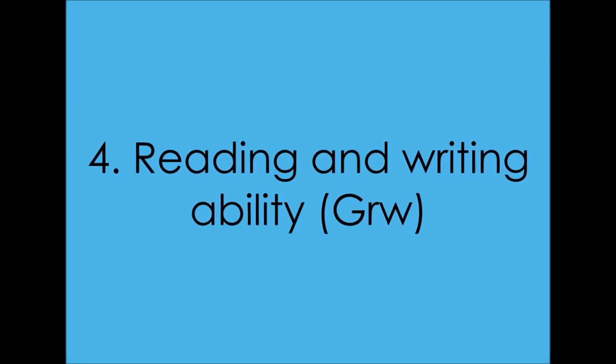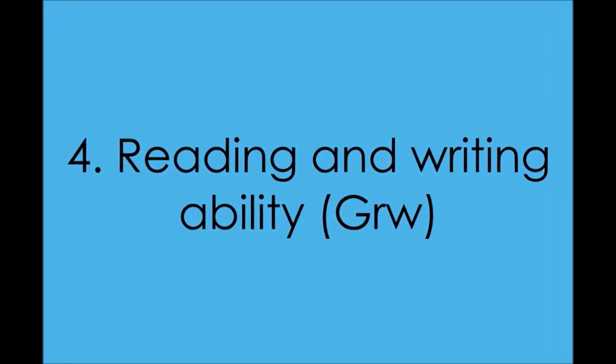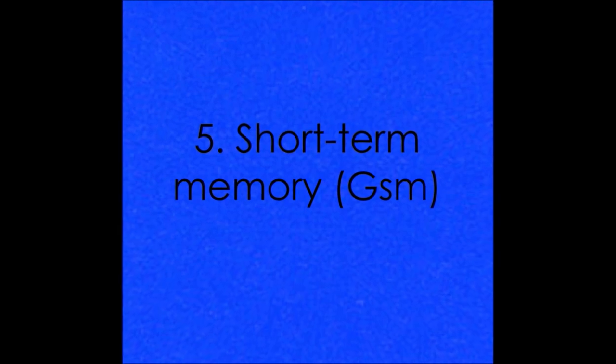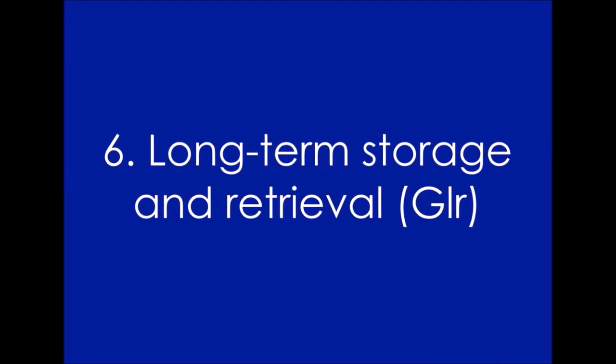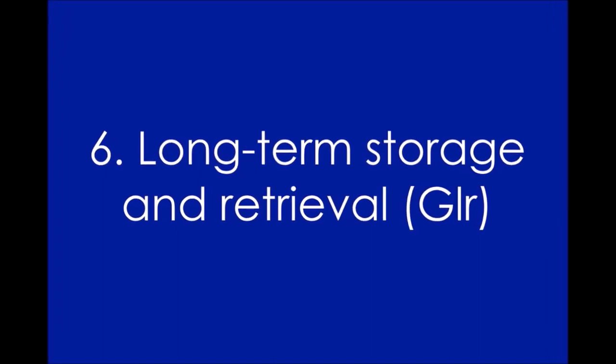4. Reading and writing ability, or GRW, which includes basic reading and writing skills. 5. Short-term memory, or GSM, which is the ability to apprehend and hold information in immediate awareness, and then use it within a few seconds. 6. Long-term storage and retrieval, or GLR, which is the ability to store information and fluently retrieve it later in the process of thinking.